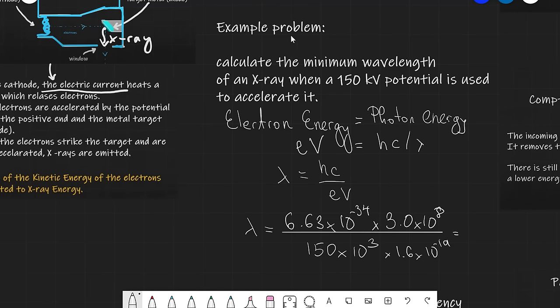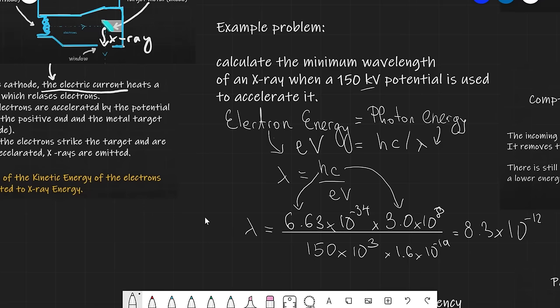Let's work through an example: calculate the minimum wavelength of an x-ray when a 150 kV potential is used to accelerate electrons. We set the electron energy equal to the photon energy. Electron energy is charge times voltage, written as eV, and that equals hc over lambda, our photon energy. Rearranging, the wavelength equals hc divided by eV. Substituting h = 6.63×10⁻³⁴, c = 3×10⁸, 150 kV, and e = 1.6×10⁻¹⁹, we get about 8.3×10⁻¹² meters.